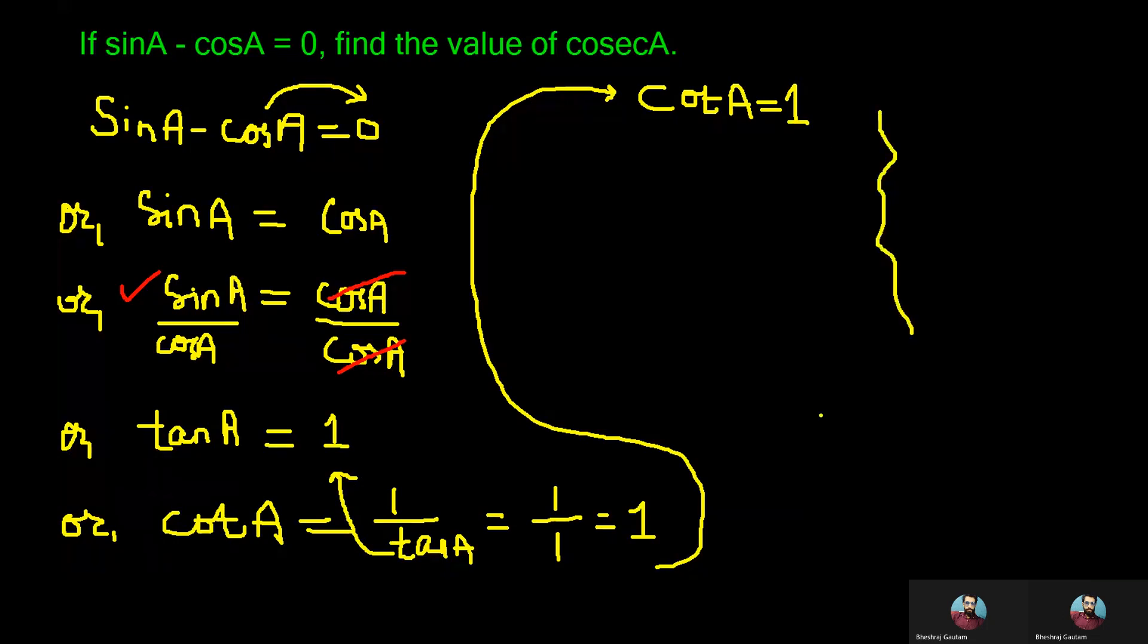Now we recall one of the formulas we have learned as the basic one in trigonometry where cosec square theta minus cot square theta is equal to 1, and simplifying this one we can even write cosec theta is equal to root under 1 plus cot square theta.